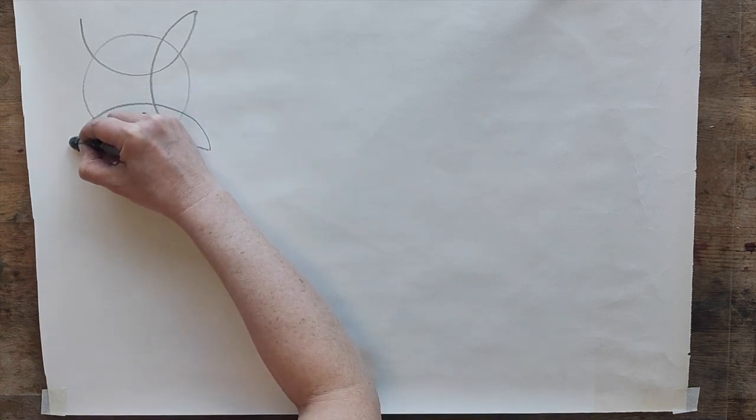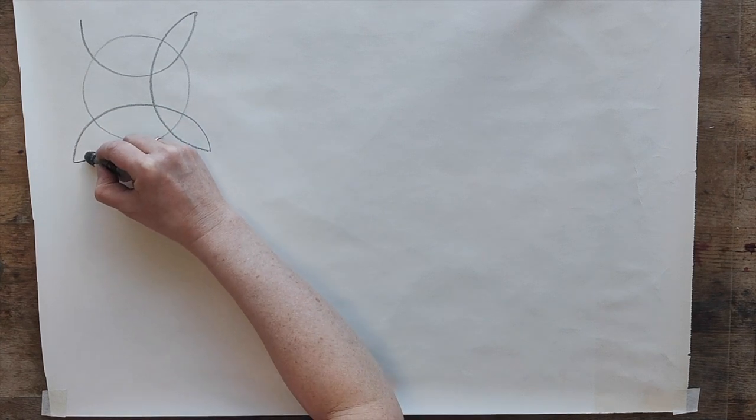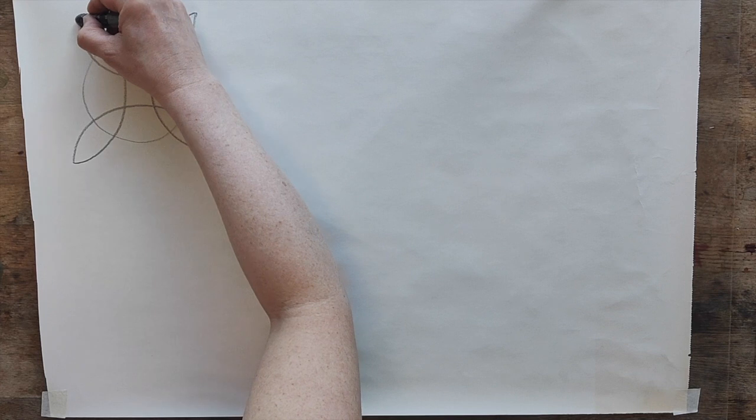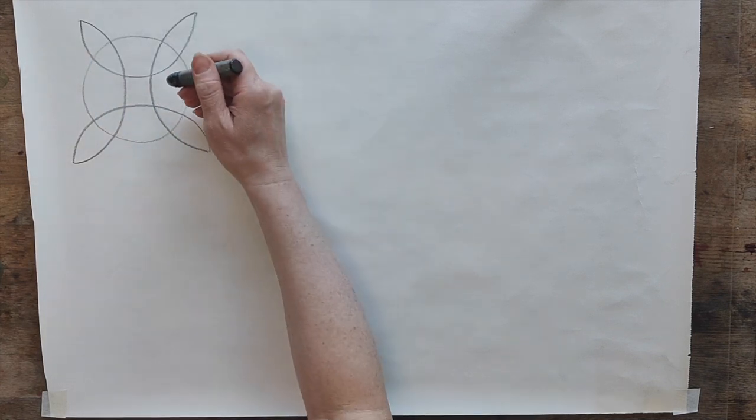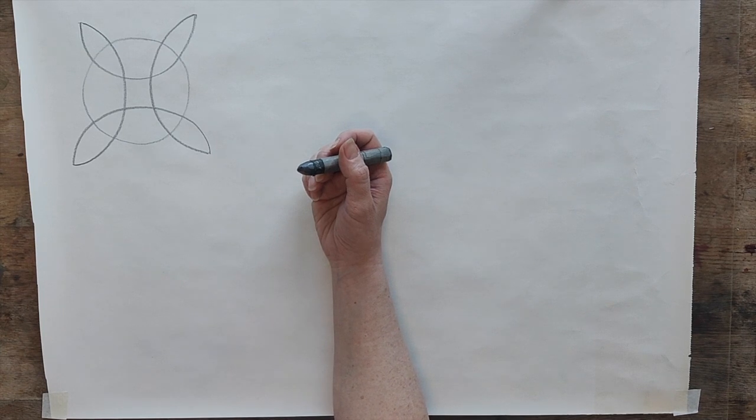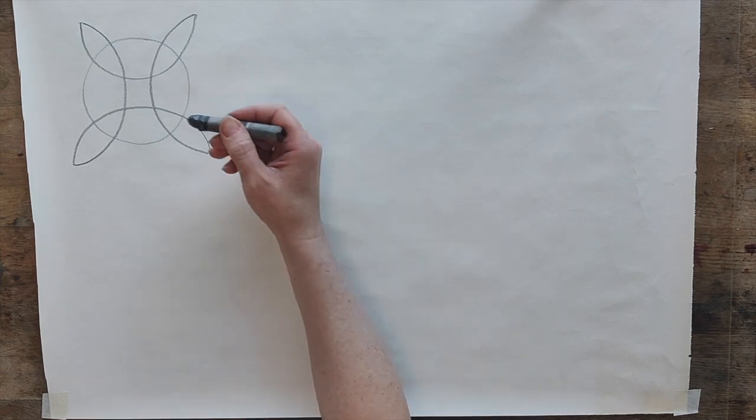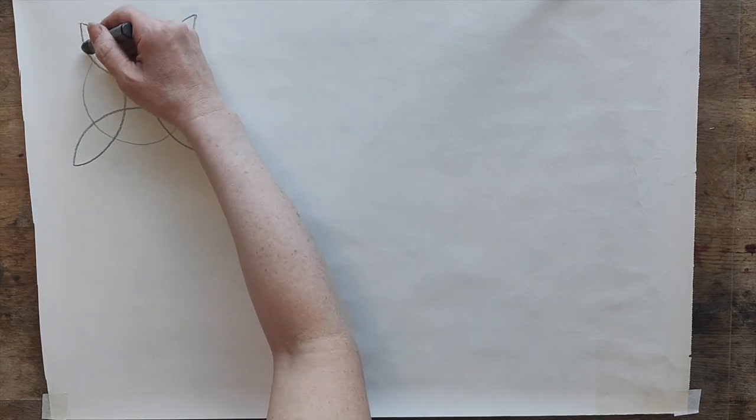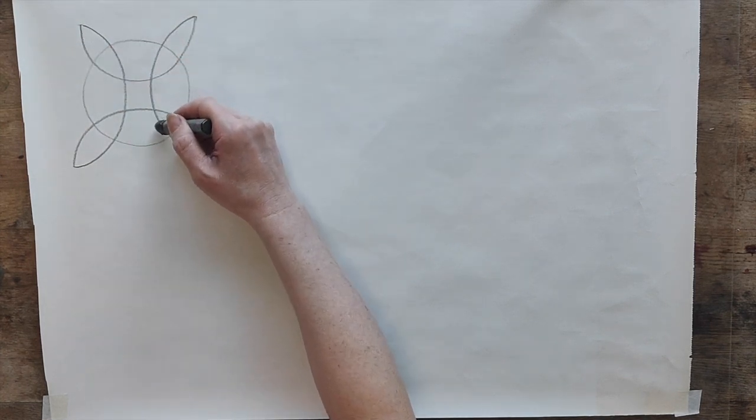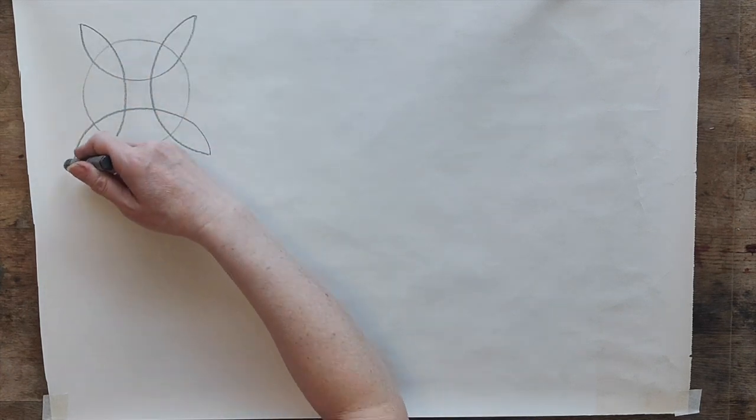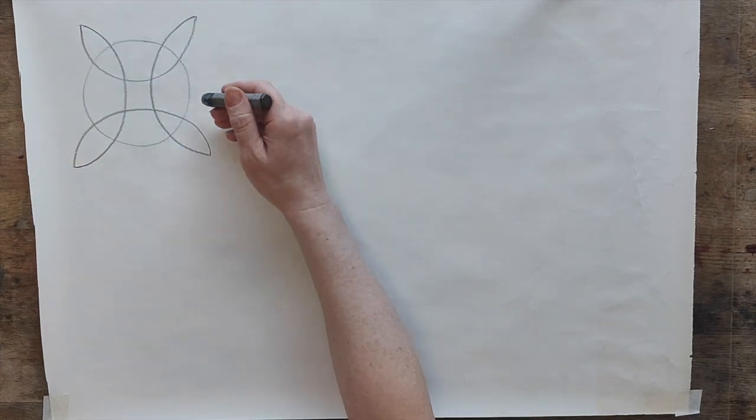Then you loop in and you meet up with your line where you started it. So this is the form that I want you to practice and that's the very basic. You can see you have a little square here in the center and you have four kind of loops that go round your circle.